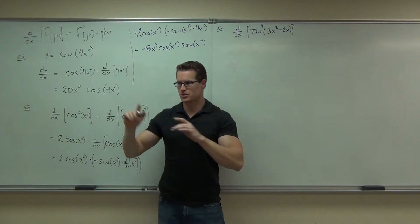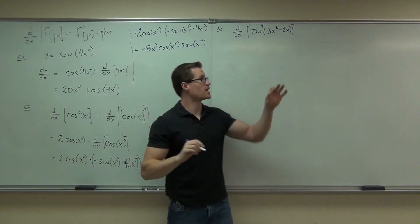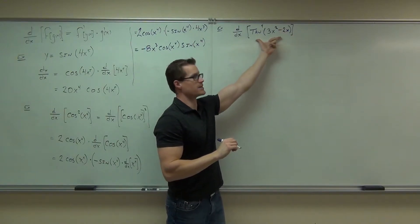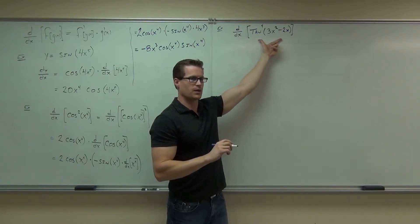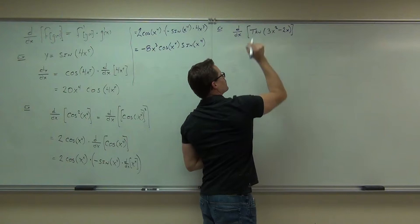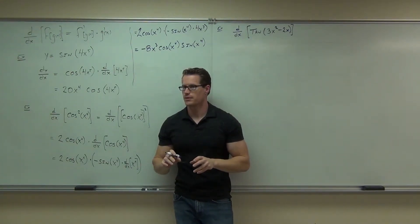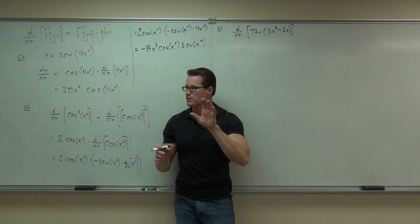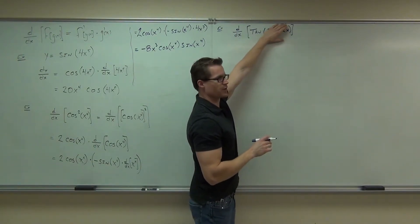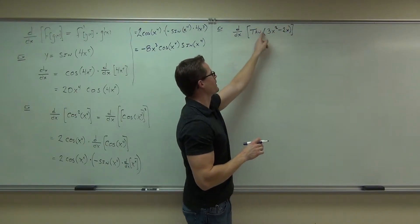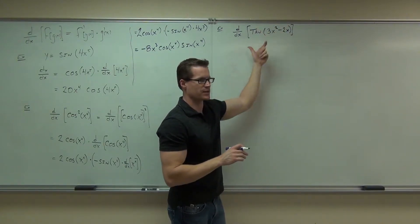General power rule. That would be just very similar to that problem. You would have to bring down the four, all of this to the third power, derivative of the entire inside thing. Do you see it? Without the power, what are we talking about here? That's the chain rule. Do you see, if you can cover something up and you still have a function, that's typically a chain rule. So we still have a chain rule right here. It's not product rule. That's not a product. It's tangent of something. That's a chain rule, it's composition.